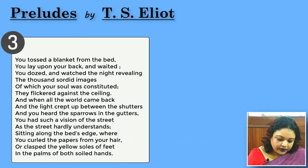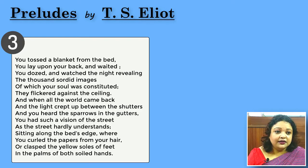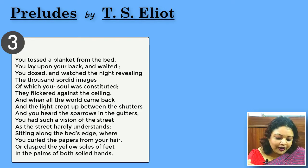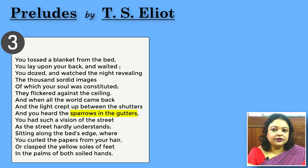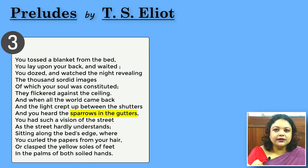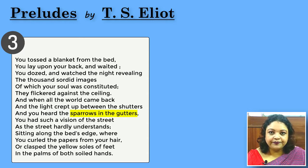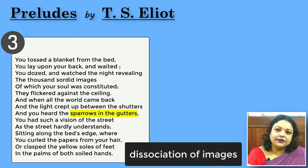'They flickered against the ceiling, and when all the world came back and the light crept up between the shutters' — when morning is finally there, when she is supposed to feel happy and rejuvenated because night is over, what does she hear? 'You heard the sparrows in the gutters.' Sparrows — so there are no nightingales or larks anymore. Sparrows are very urban birds, and the moment Eliot mentions sparrows in the gutters, he is taking away all those preconceived ideas formed for so many years in the minds of readers, presenting an image dissociated from what you think about it and giving it a different meaning altogether.